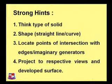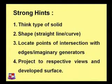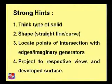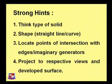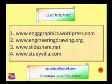Now some important hints for solving this problem. Hint one: think about the type of solid given in the data. Then find out the shape of the intersection — whether it is a straight line or a curve. Then locate the points of intersection with edges or imaginary generators — for cone and cylinder it would be imaginary generators; for solids like a prism it would be edges. Then project to respective views and develop the surfaces. Some useful websites are also provided with well-solved problems.